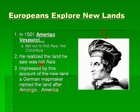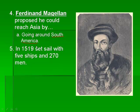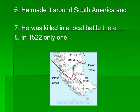Moving on to Ferdinand Magellan. He proposed that he could reach Asia by going around South America, but he did not count on the fact that the Pacific Ocean was so vast. In 1519, he set sail with five ships and 270 men. He made it around South America — getting down to the tip near Antarctica, so it's really cold with ice, and probably penguins.